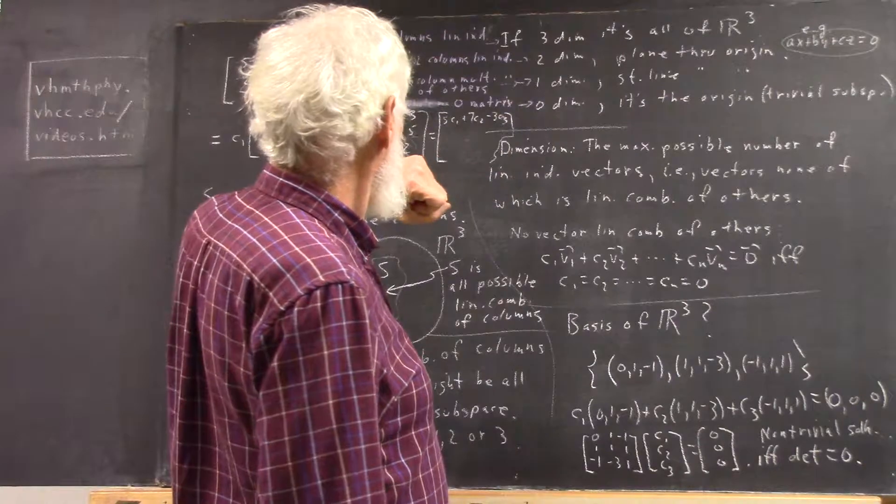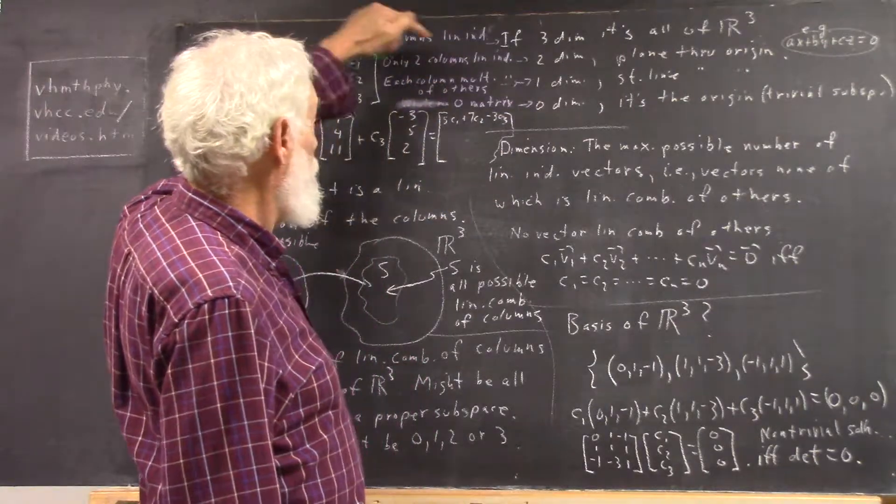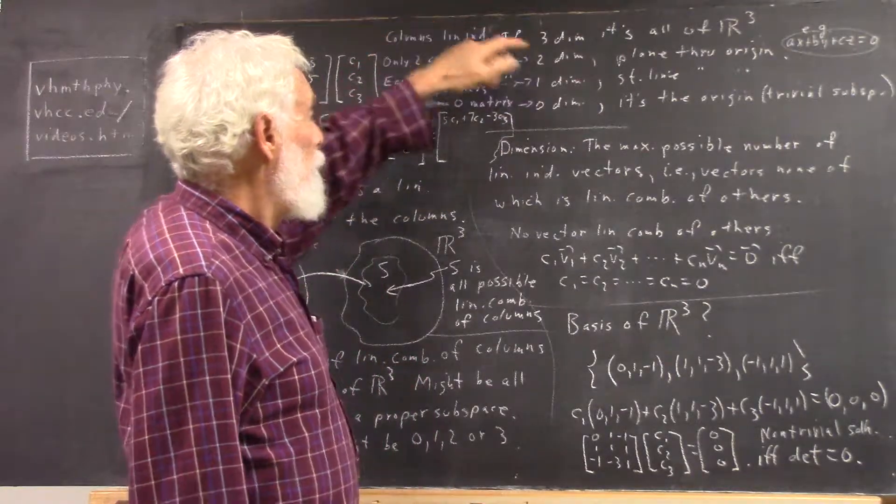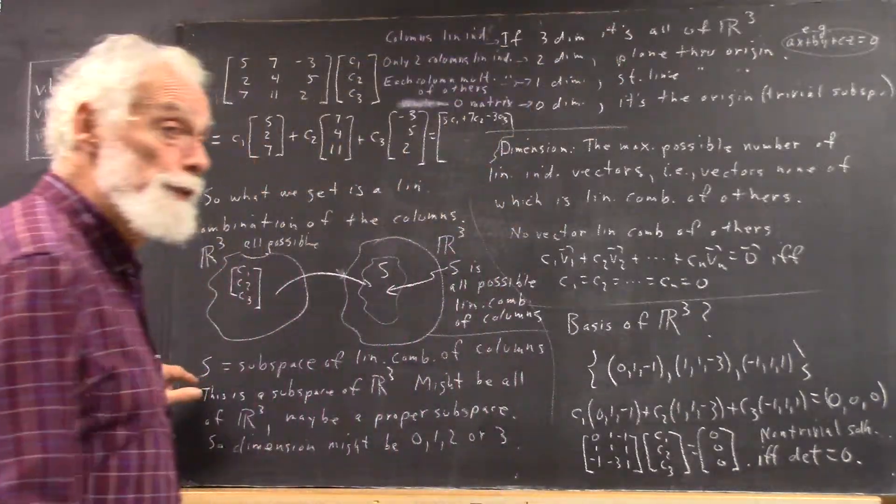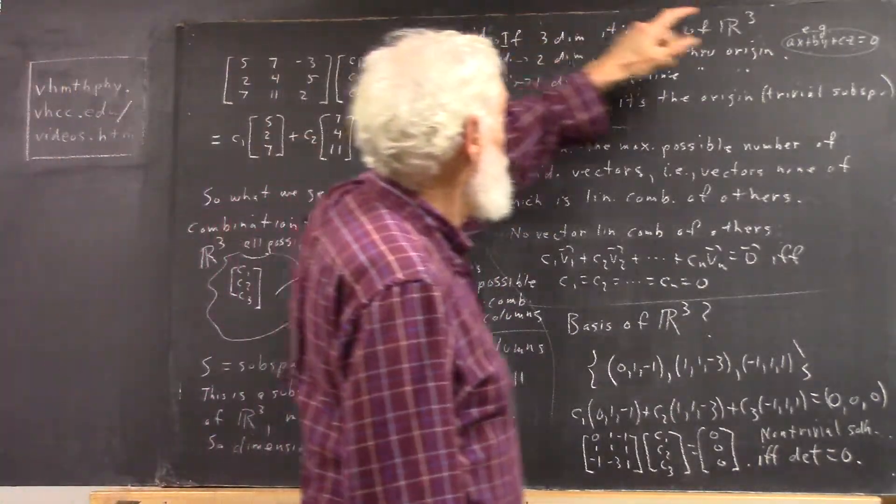But that takes that just a little further again. If the columns are linearly independent, then the subspace, when I say it's all of R3, I'm talking about the subspace.